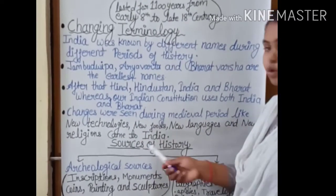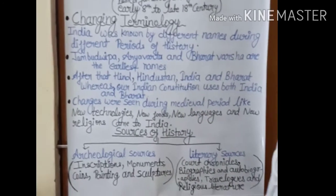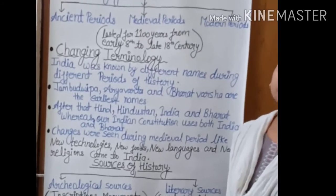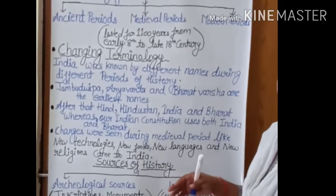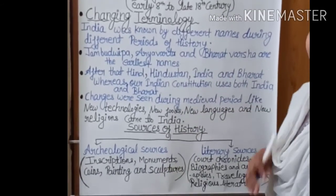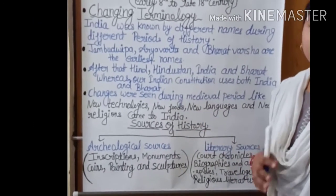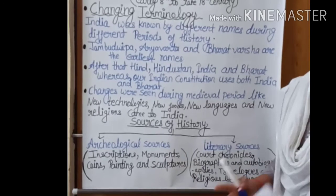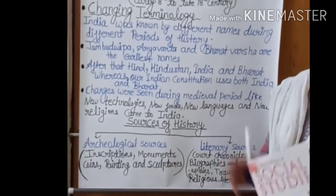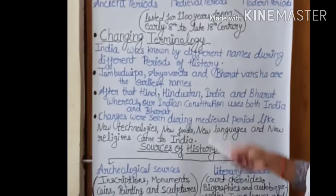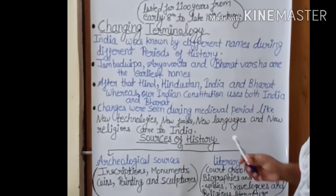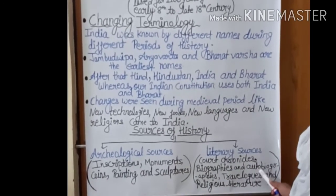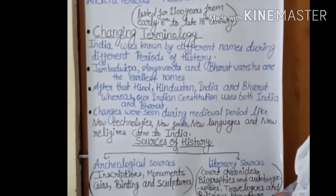The next source of history is literary sources. Literary sources are also the indirect sources of history. During the medieval period, the use of paper was very common, which is why we have plenty of literary sources available from the medieval period. Literary sources include court chronicles, biographies and autobiographies, travelogues, and religious literature.